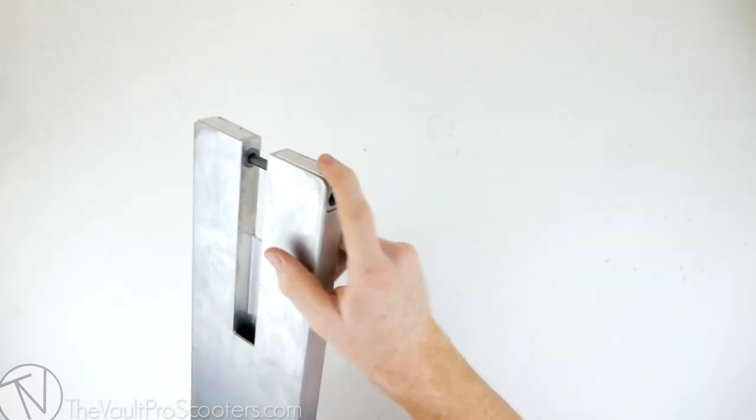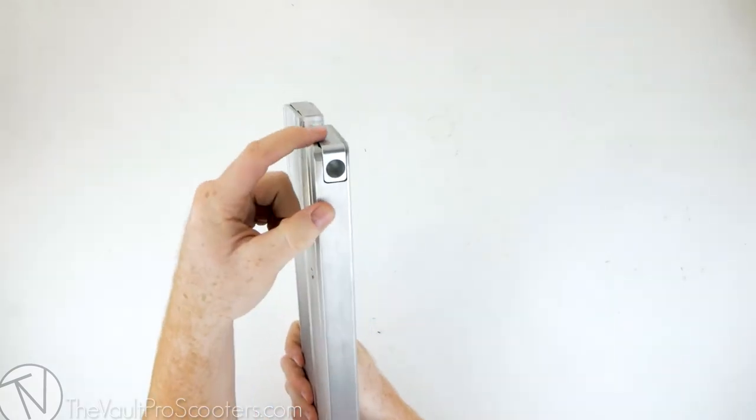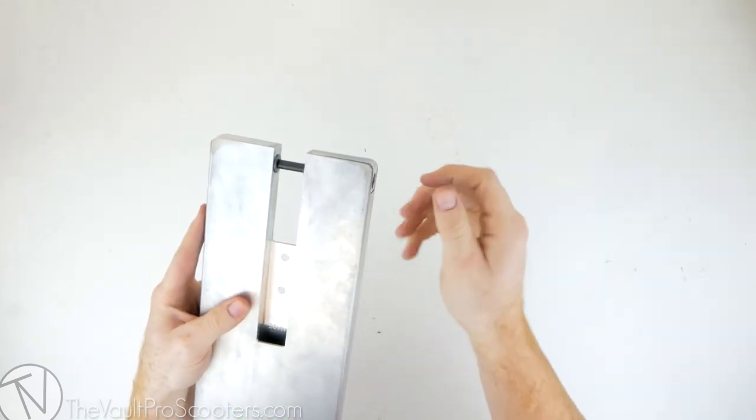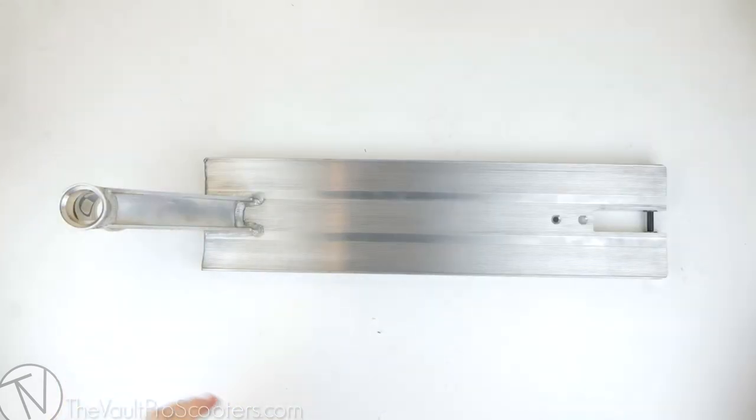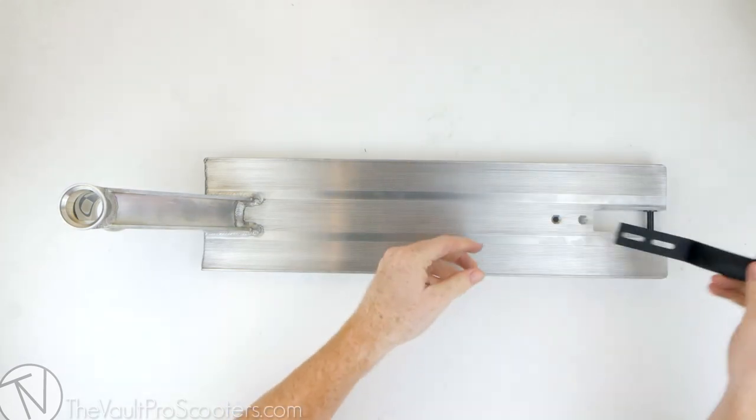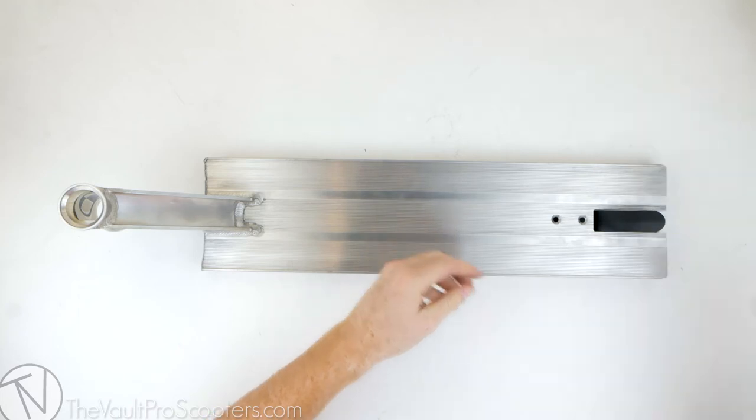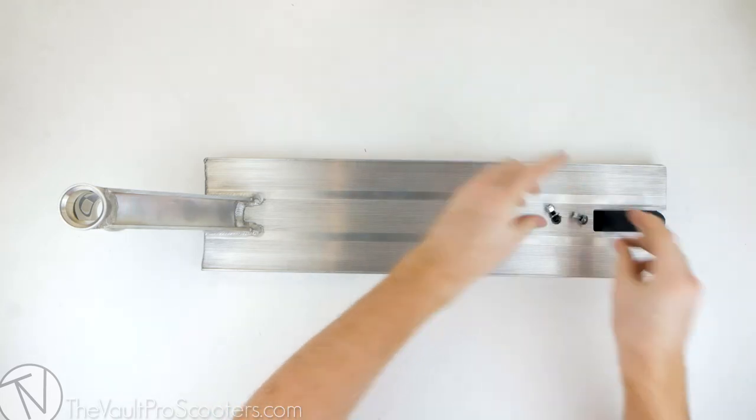Also included with the deck are aluminum dropout inserts. This side here is countersunk for the bolt head, this side here is threaded for the nut. That means you only need one tool to take your axle out—you just throw a six millimeter in there and loosen it and you're good to go. Also included is the brake, slides in just like that, sits like that, and then you have the two brake bolts as well.